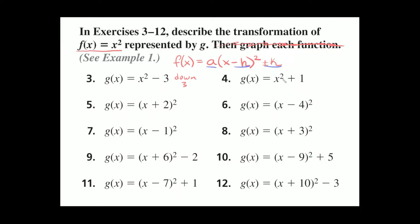Number four: g of x equals x squared plus 1. Again we have this plus or minus some number at the very end. So this would translate the parabola up one spot or one space.